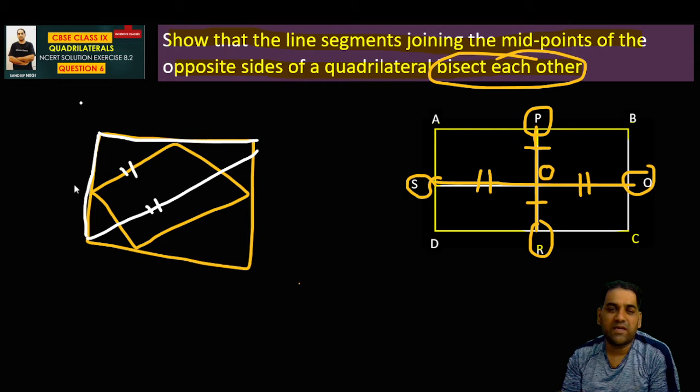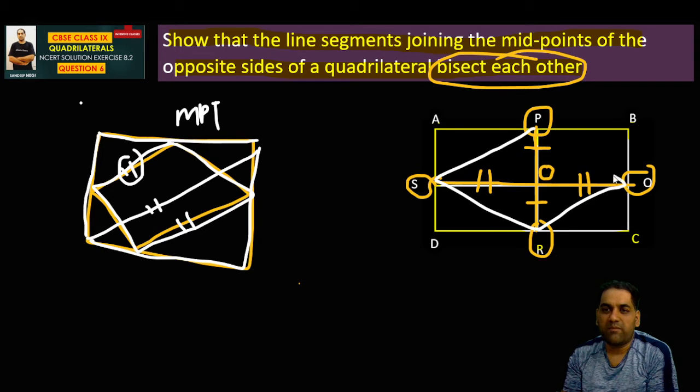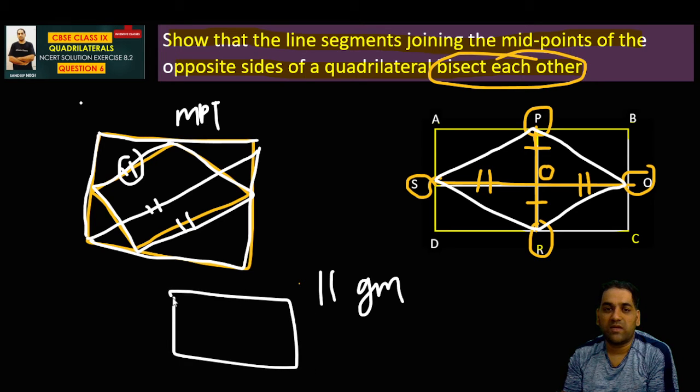By midpoint theorem, this side will be parallel as well as half of that side. Similarly, this will also be parallel as well as half. So I will show that we get a parallelogram here. And the property of a parallelogram is that the diagonals bisect each other.